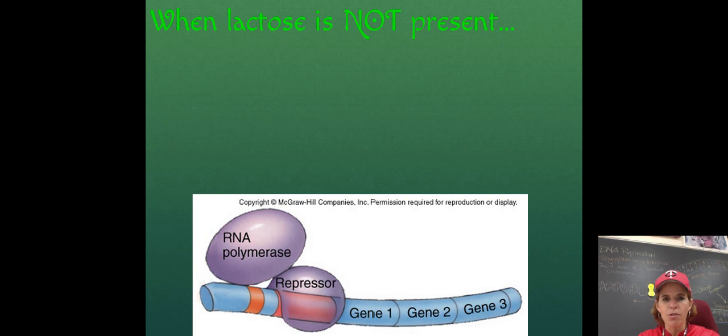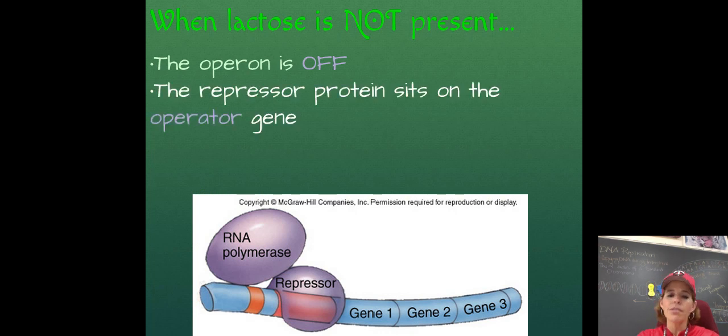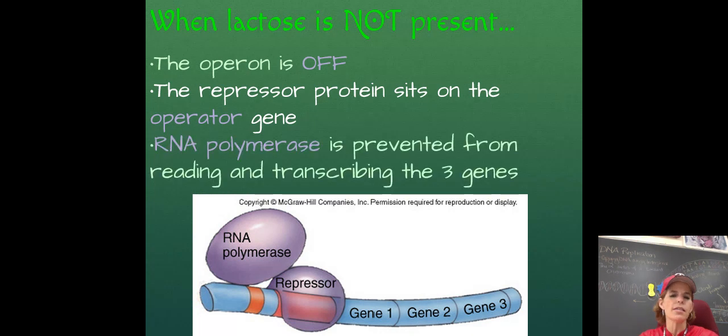This diagram is right out of your textbook. When lactose is not present, so if I drop these E. coli into a bowl of water, this is what should happen. The operon should be turned off. That roadblock, that repressor is sitting in front of it. It's on the operator, and it prevents the RNA polymerase from moving across to gene one, two, and three. So we don't make those proteins, and E. coli doesn't waste energy.